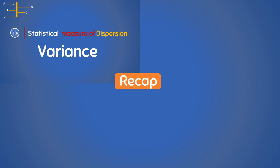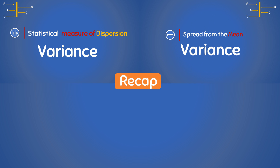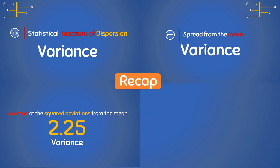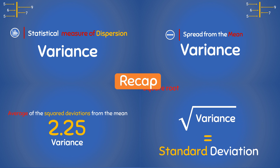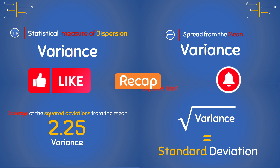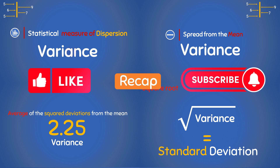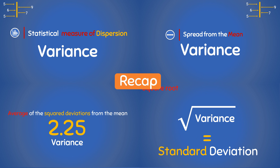To recap, the variance is a statistical measure of dispersion of data. It tells us how far all the numbers in the data set are spread out from the mean of that data. It is defined as the average of the squared deviations of all data points from the mean of the data, and the square root of the variance, also known as standard deviation, is a much more common measure of dispersion. If you gained value with this video, please support by hitting the thumbs up button and sharing with your friends and colleagues. Don't forget to subscribe and click the notification button to be notified of future videos.